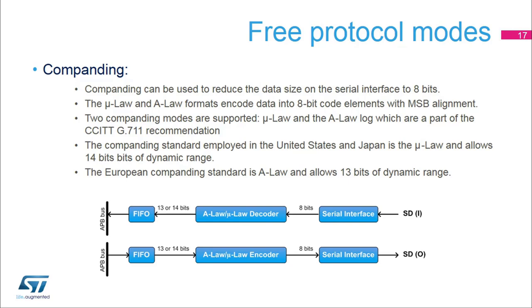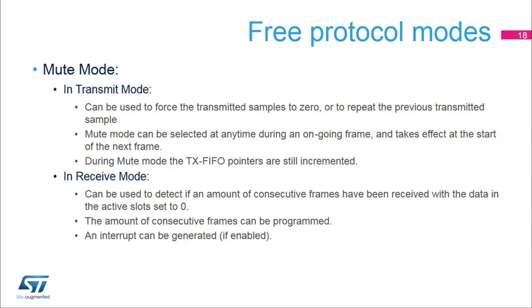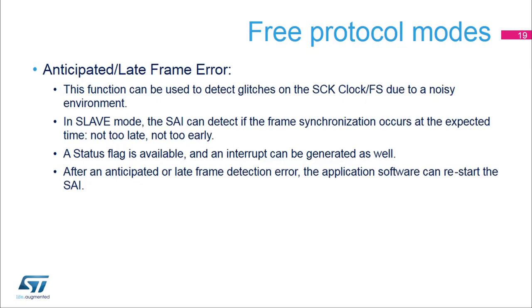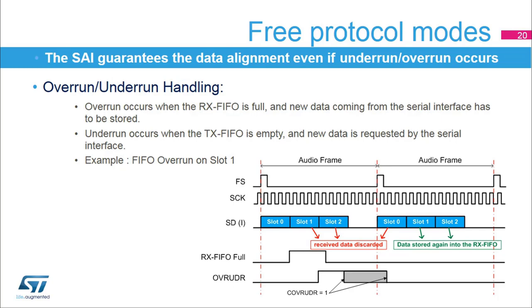Note that A-law and U-law are not lossless compressors. Companding modes are generally used in telephony. The small data are amplified and the big data are attenuated. The SNR tends to be identical for a strong and for a weak signal. The SAI also provides a mute function. The anticipated or late frame error detection increases the interface reliability by detecting unexpected frame synchronization misalignment. The SAI guarantees the data alignment even if an underrun or overrun occurs.